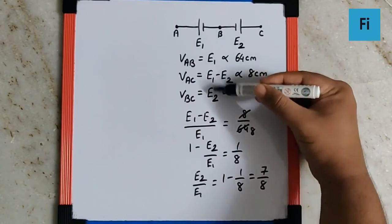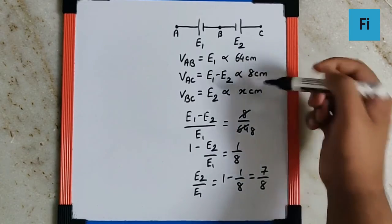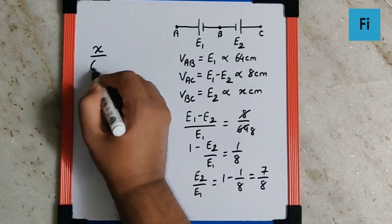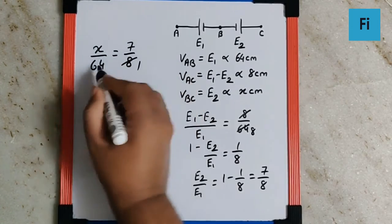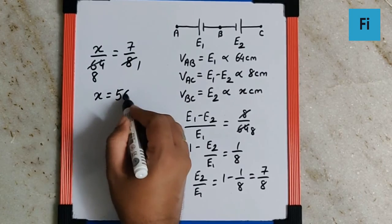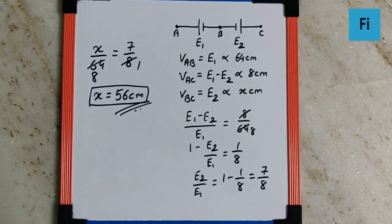Now if we take E2/E1 from these two cases, it will be X/64. So we can equate this: X/64 equals 7/8. The X value is going to be 56 cm, and that will be your final answer.